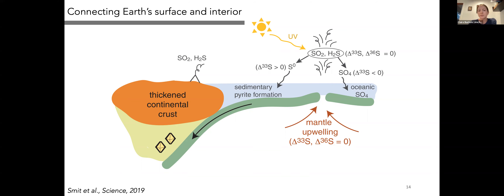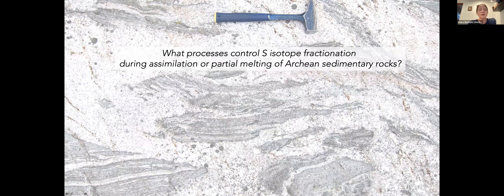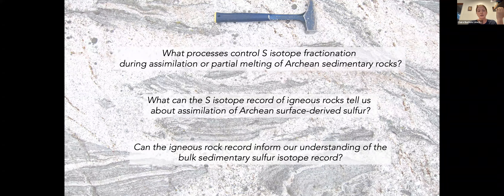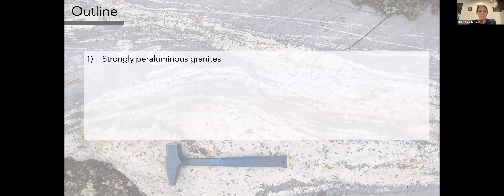The main questions I want to address today are: What processes control sulfur isotope fractionation during assimilation or partial melting of Archaean sedimentary rocks? What can the sulfur isotope record of igneous rocks tell us about assimilation of Archaean surface-derived sulfur? And can the igneous rock record inform our understanding of the bulk sedimentary sulfur isotope record, and if so, in what way?